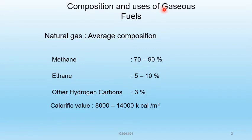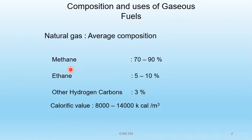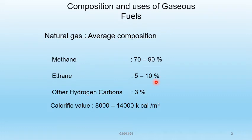Composition and uses of gaseous fuels. First, natural gas. The average composition of natural gas contains methane and ethane, with small quantities of other hydrocarbons. Methane percentage is 70 to 90%, ethane percentage is 5 to 10%, and other hydrocarbons is only 3%.